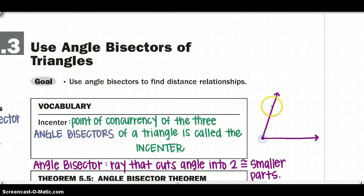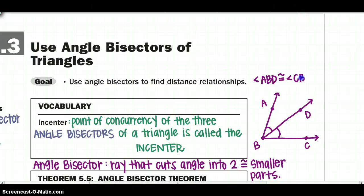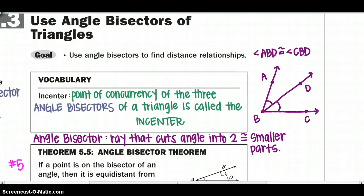So if I have angle ABC, my angle bisector is going to be a ray that cuts this angle and makes that side congruent to that side. An angle bisector makes angle ABD congruent to angle CBD. Just a little refresher, and we are going to learn more about what that angle bisector does and tells us.